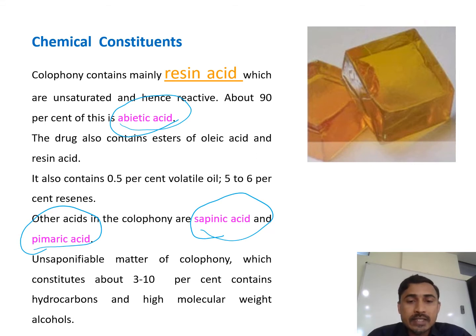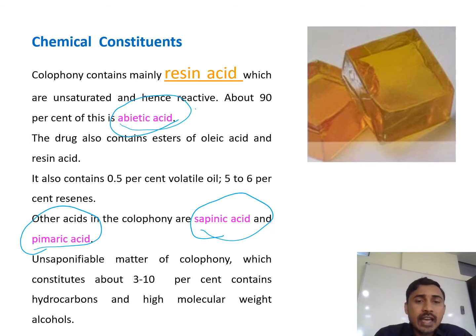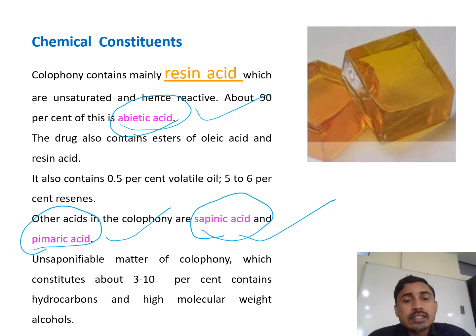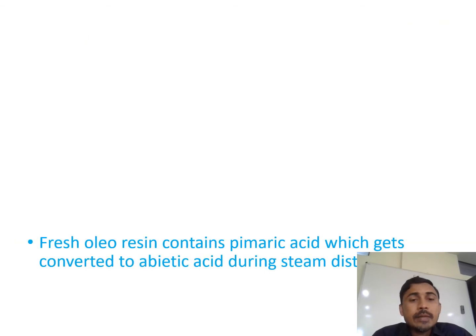There is also unsaponifiable matter in colophony, which constitutes about three to ten percent and contains hydrocarbons and high molecular weight alcohols. The important chemical constituents to learn from this are abietic acid, sapinic acid, and pimaric acid — these are the three important phytoconstituents that are examples of resin acids present in colophony.